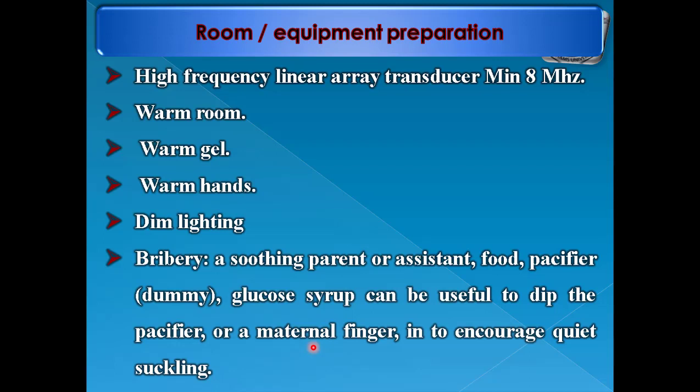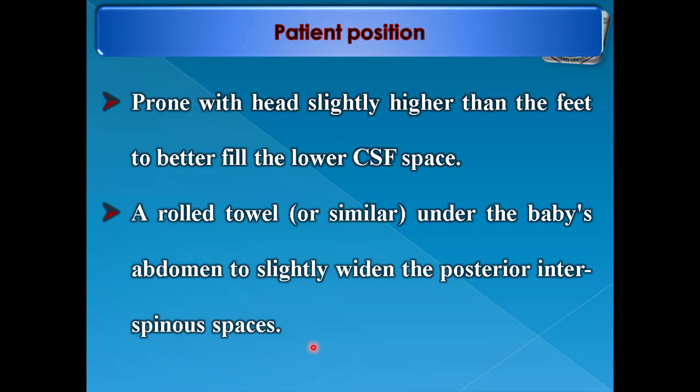Patient preparation: an assisting parent or food such as a pacifier, dummy, or glucose syrup can be used to encourage quiet cooperation. Patient position: prone with head slightly higher than the feet to better fill the lower CSF space. A rolled towel under the baby's abdomen slightly widens the posterior interspinous spaces.